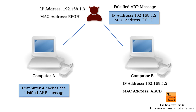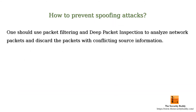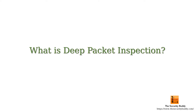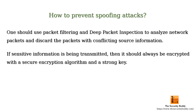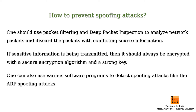How to prevent spoofing attacks? One should use packet filtering and deep packet inspection to analyze network packets and discard the packets with conflicting source information. If sensitive information is being transmitted, it should always be encrypted with a secure encryption algorithm and a strong key. One can also use various software programs to detect spoofing attacks like the ARP spoofing attack.